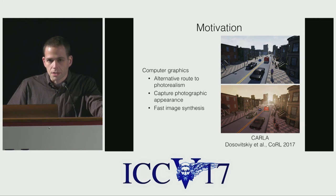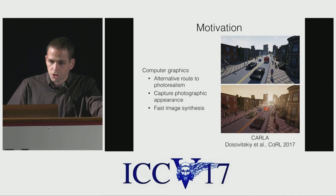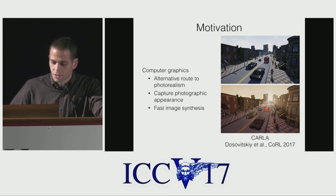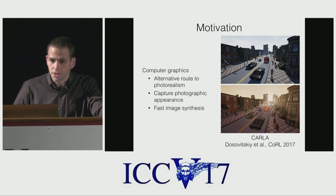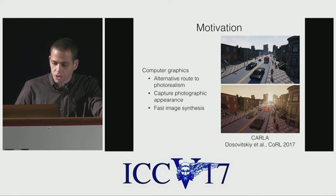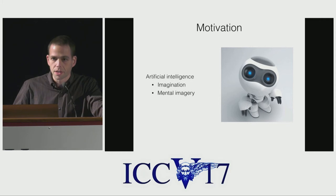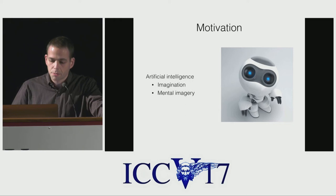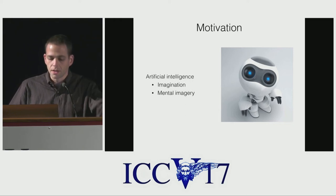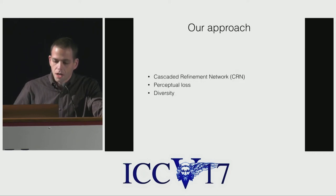We conjecture that direct image synthesis using deep networks can provide an alternative route to photorealism that can usefully complement existing computer graphics techniques. We don't think approaches such as ours are going to replace rendering engines, but they can usefully complement existing rendering engines to enhance realism. These approaches are also very fast, so they can run in real-time alongside conventional computer graphics rendering. Our second source of motivation is artificial intelligence — in particular the role of mental imagery and mental simulation in biological intelligence systems, animals, and humans. We conjecture that being able to imagine scenes in detail will be useful to artificially intelligent systems.